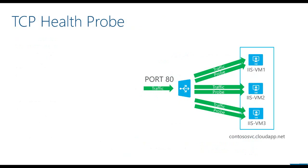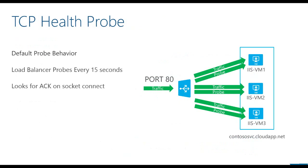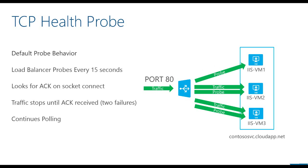Load-balanced endpoints can be configured with health probes for an additional layer of high availability. The first health probe type is a TCP health probe, which is the default probe behavior when you create a load-balanced set. The load balancer will attempt a socket connection every 15 seconds on a private port for your endpoint, looking for a TCP ACK. If the load balancer does not receive a reply in response to two probes, traffic is no longer sent to that virtual machine. The load balancer continues polling, so when the virtual machine is healthy again, it's automatically put back into rotation.